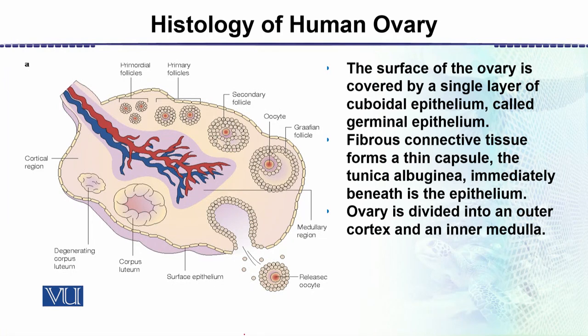This is a diagram showing the overall internal structure of the ovary. We can see that on one side there are arteries and veins, along with nerves. It is covered by a connective tissue layer, and there is another membrane called the tunica albuginea, and immediately above that is the surface epithelium.